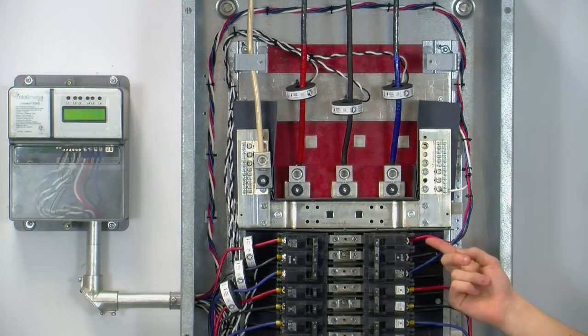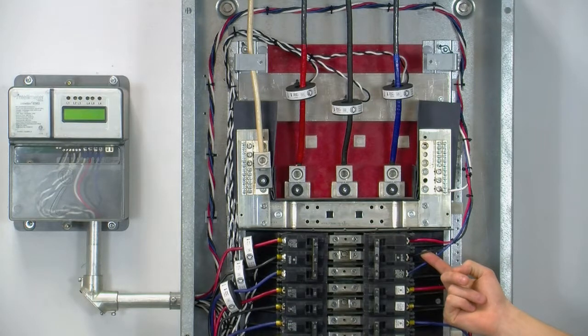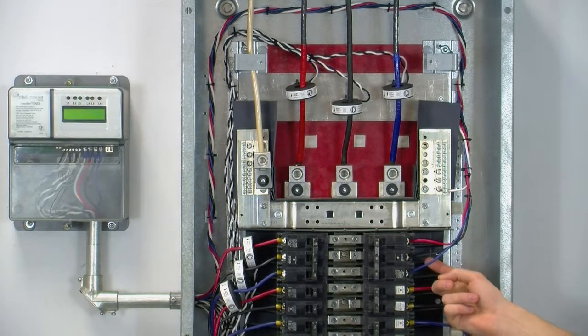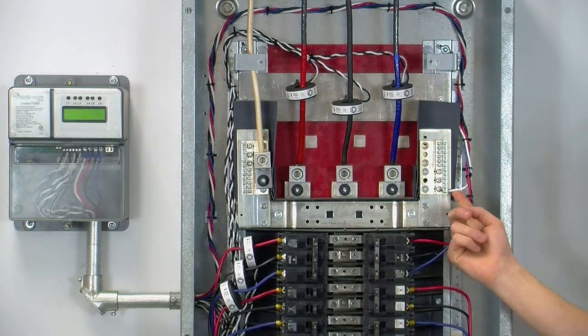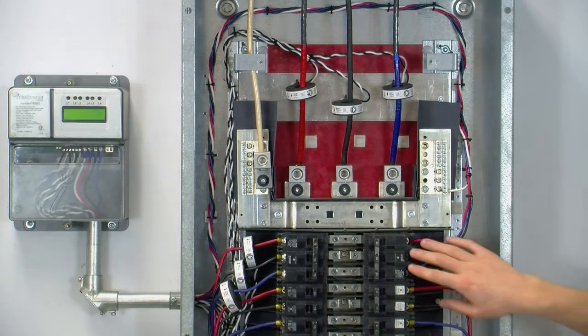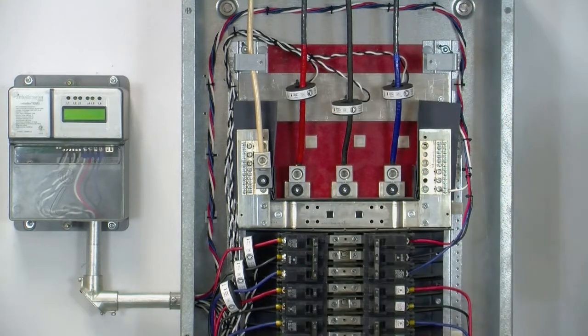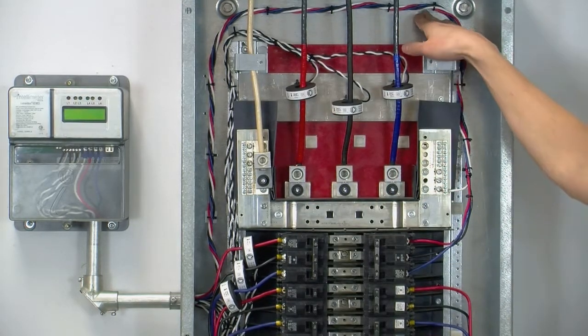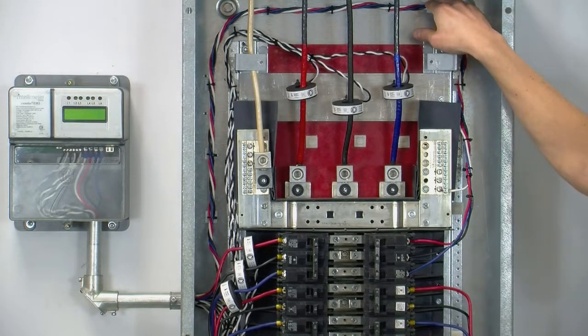In Canada, we use red for phase A or line 1, black for phase B or line 2, and blue for phase C or line 3. And lastly, we use white for neutral. So we're going to terminate one end of the wires into the breaker and neutral block and run the four wires back to the meter. You can use adhesive mounting bases in combination with zip ties to cleanly dress your wires back to the meter enclosure.